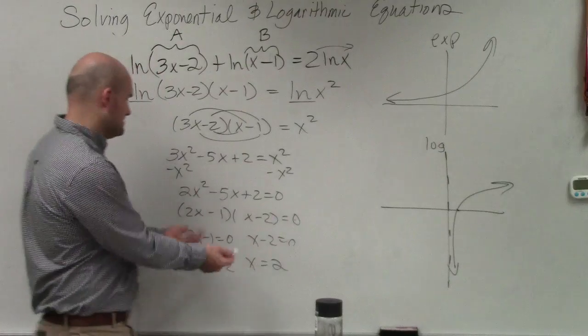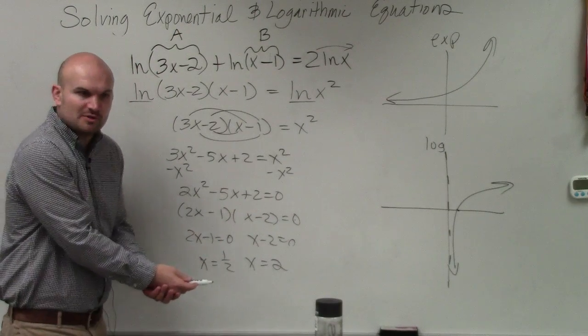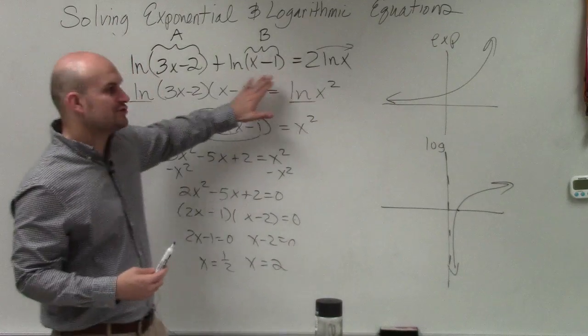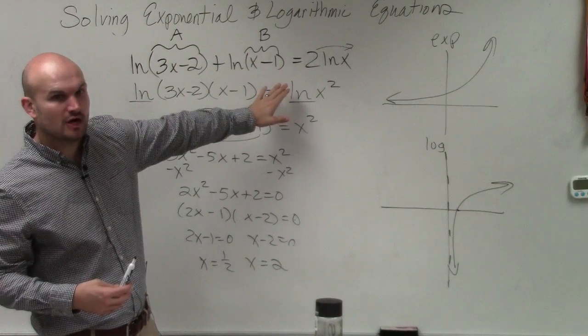Now, you might think about this and say, oh, well, we're good, right? We have two positive numbers, so we're good. But you don't know what transformations actually occur in this graph at all.